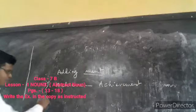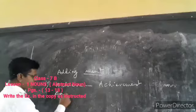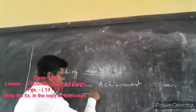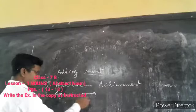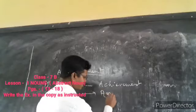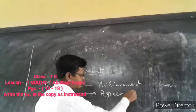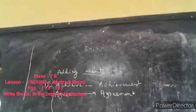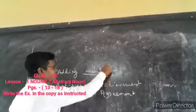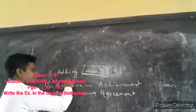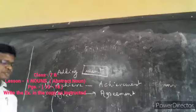Second we have agree, it becomes agreement. Agree, when you make it an abstract noun, it will be agreement. So this is the example of the first one, that is by adding M-E-N-T, you can make abstract nouns.